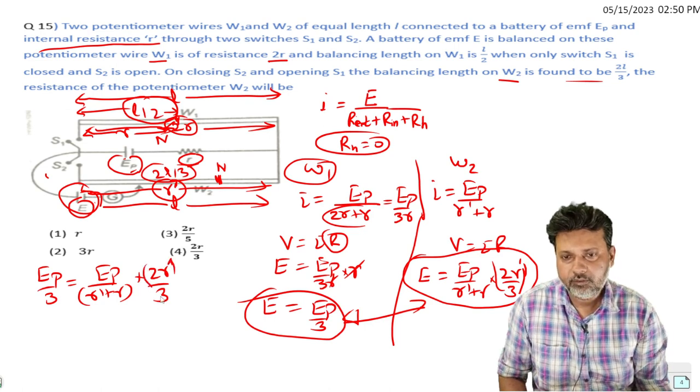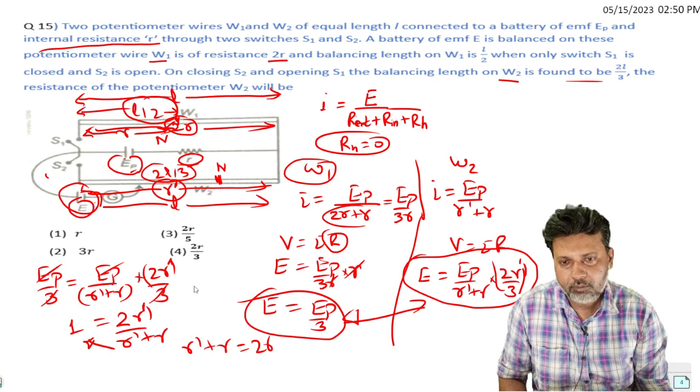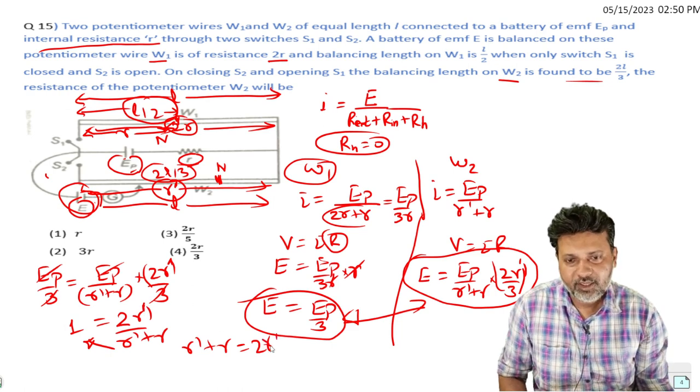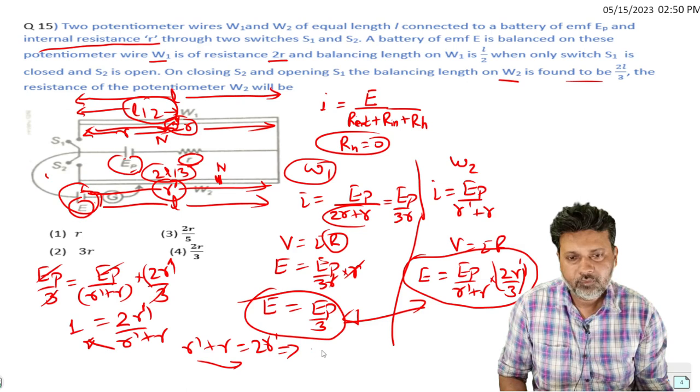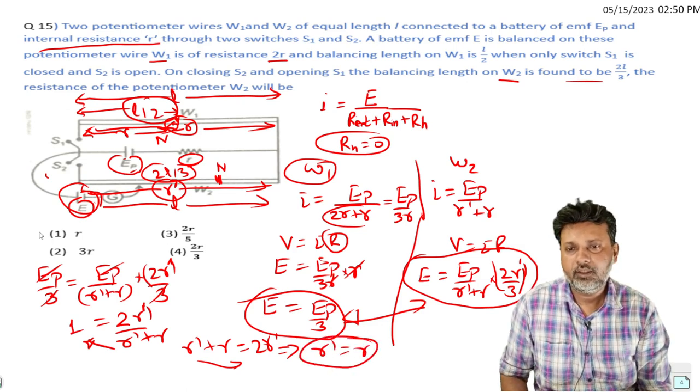Cross multiplying: r dash plus r equals 2r dash. Moving r dash to the other side gives r dash equals r. So r dash equals r.